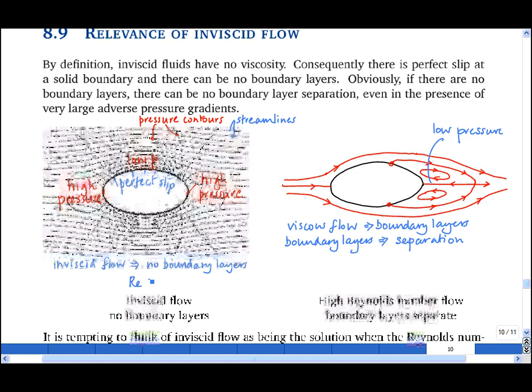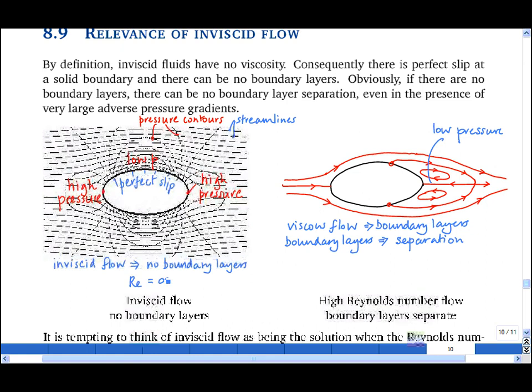In inviscid flow, the Reynolds number is equal to infinity because the viscosity is zero. In a high Reynolds number flow, you can have the Reynolds number tending to infinity, and it's tempting to think that the flow solution as the Reynolds number tends to infinity equals the flow solution when the Reynolds number is equal to infinity.